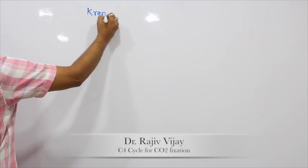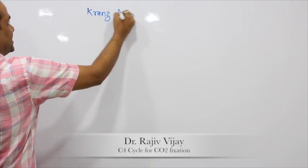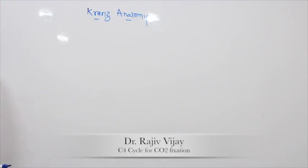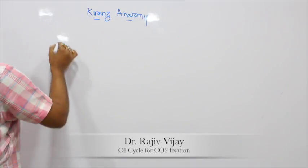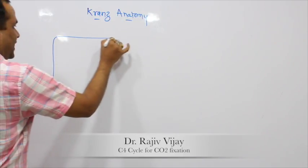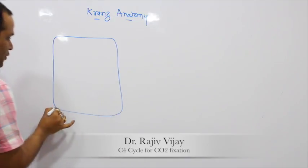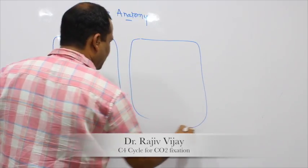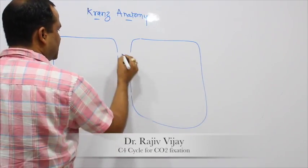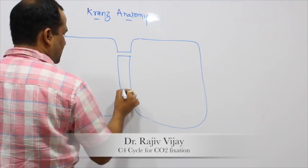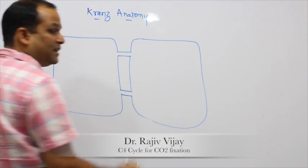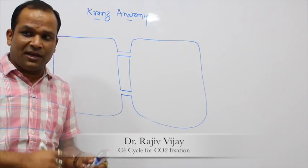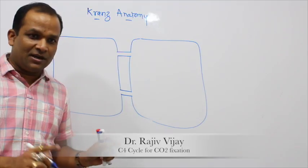A plant has a new anatomy known as Kranz anatomy. In Kranz anatomy, two types of cells are developed separately, and both cells are joined with the help of connections known as plasmodesmata. Note that desmosomes are found in animal cells, while plasmodesmata are found in plant cells.